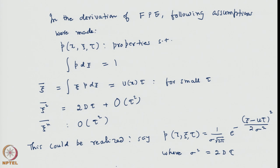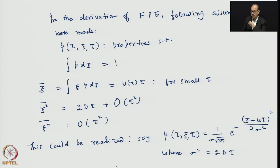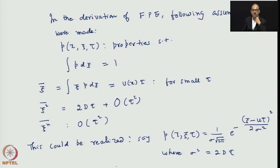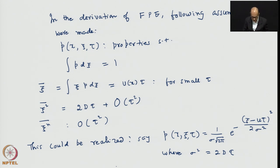I wish to point out that the assumption of a Gaussian transition probability was only an illustration — it is not a necessary condition. One can obtain the Fokker-Planck equation by considering transition probabilities other than Gaussian functions, providing they have moments of at least second order. To derive an equation up to second order, we need moments up to second order.